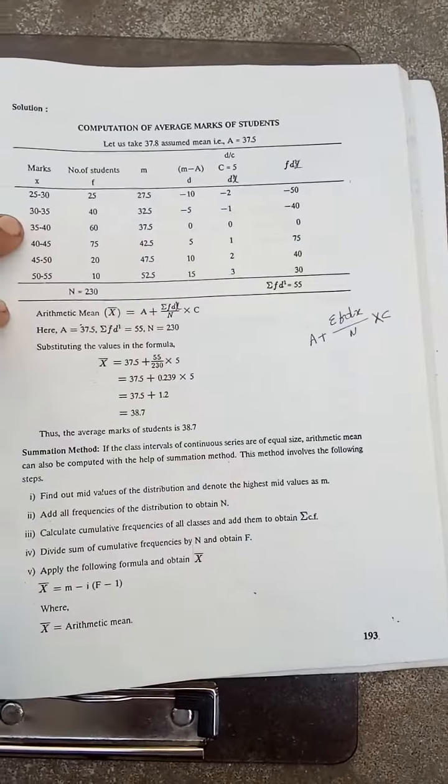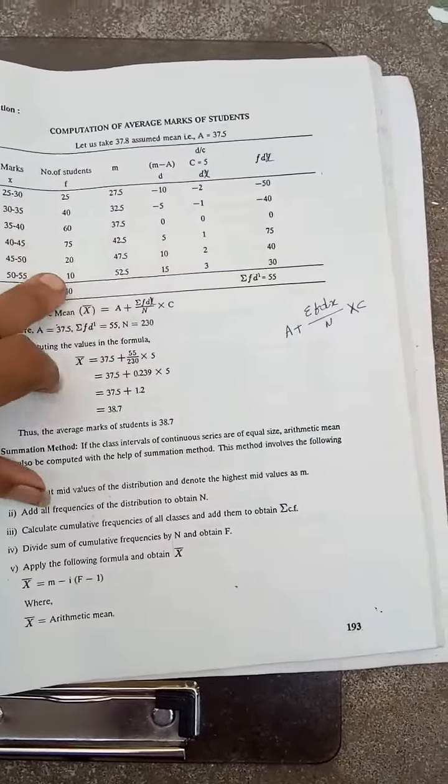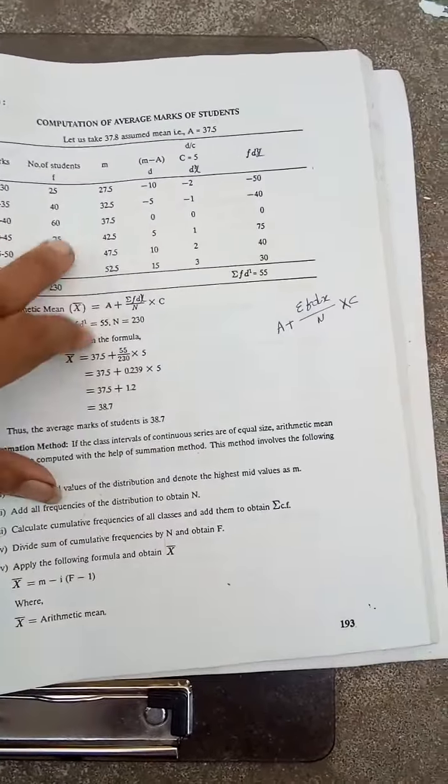See, here, my dear students, after that, let us substitute the values. This is 25 to 30, 30 to 35, like this. Frequency is given. Mid-values I have taken. Lower limit plus upper limit by 2.